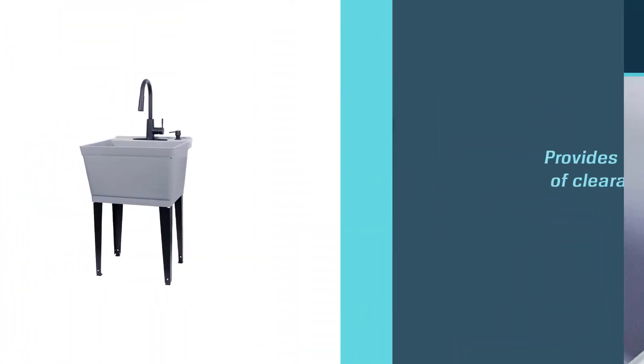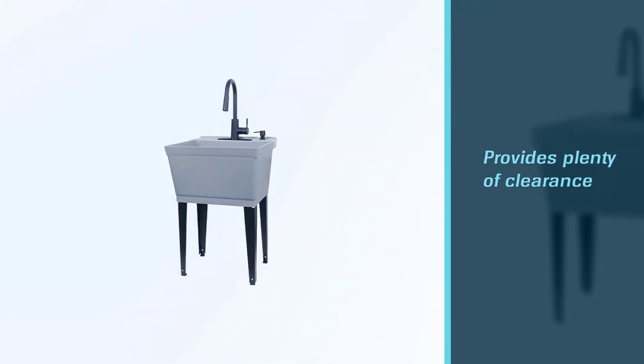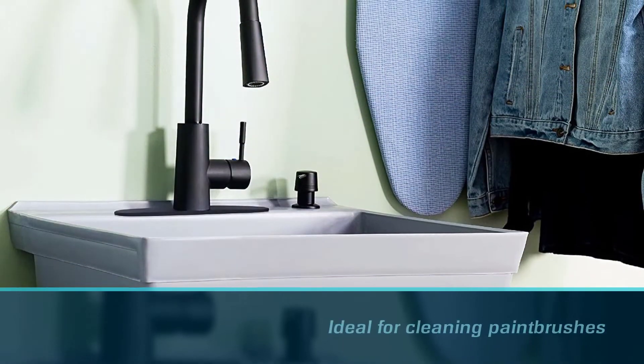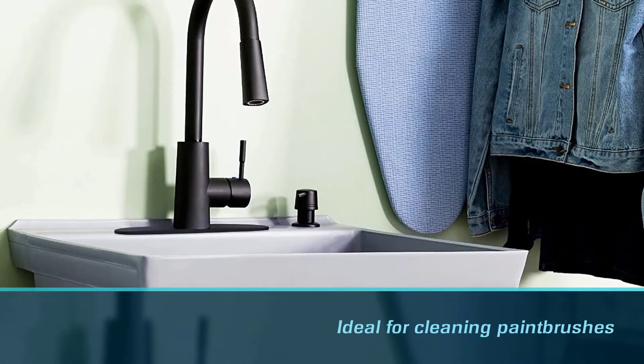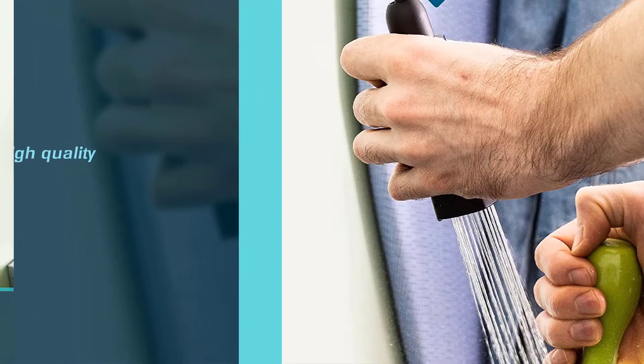Its thermoplastic material can withstand hard metal objects. This Teheila sink comes with a high-arching kitchen faucet that provides plenty of clearance for larger items. The faucet spray option is ideal for cleaning paint brushes, rinsing large pots, or even bathing a small dog.